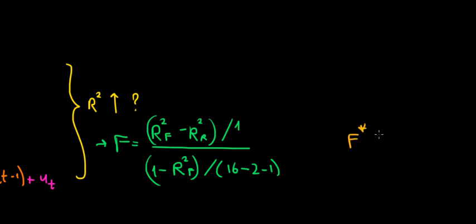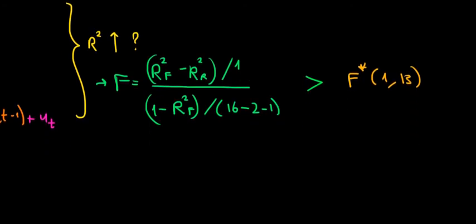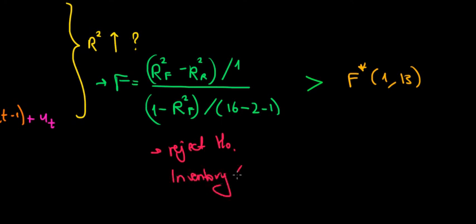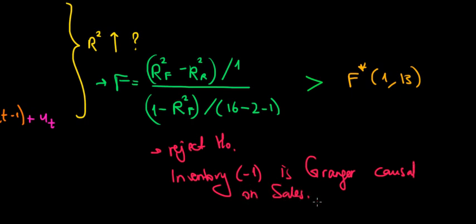That gives us our F value, which we compare with the F critical value: one degree of freedom in the numerator, and 16 minus 2 minus 1 equals 13 degrees of freedom in the denominator. If the F value is greater than the critical value, we reject the null hypothesis. This means that adding inventory in the previous period significantly improves R-squared, which means the lagged value of inventory is Granger causal on sales.